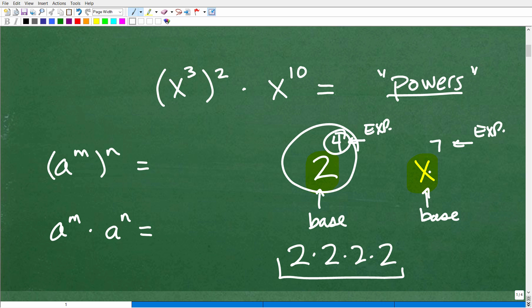And of course, x to the 7th means we're going to multiply x by itself 7 times. So that would look like 1, 2, 3, 4, 5, 6, 7. So that's a pretty long way to write x to the 7th power. That's why we use powers and exponents to make our life a lot easier.